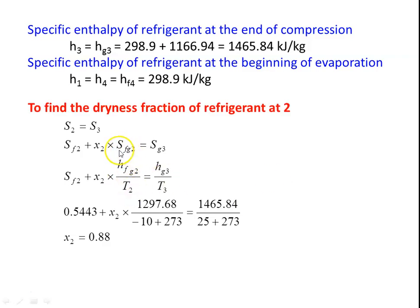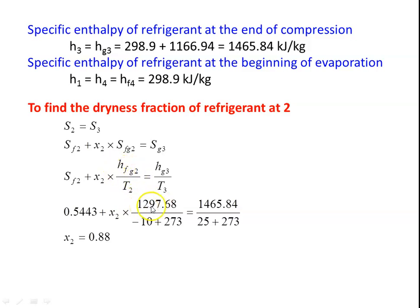The entropy of vaporization SfG = HfG / T, derived from the second law: ΔS = ΔQ / T. So SG3 = HfG3 / T3. SG value is given; X is unknown. HfG2 = 1297.68, T2 = minus 20 + 273 = 253 K. HfG3 = 1465.84, T3 = 25 + 273 = 298 K. Using S2 = S3: SF2 + X2 × (SG2 - SF2) = SG3. Calculating gives X2 = 0.88.